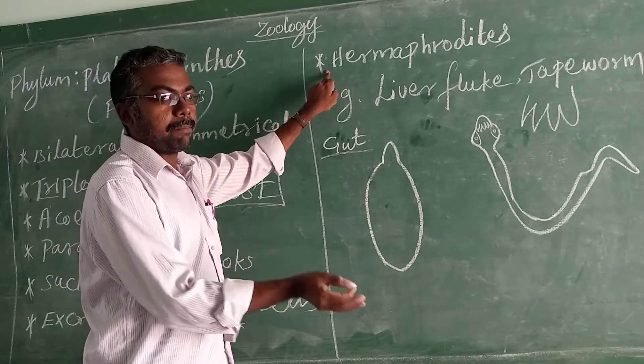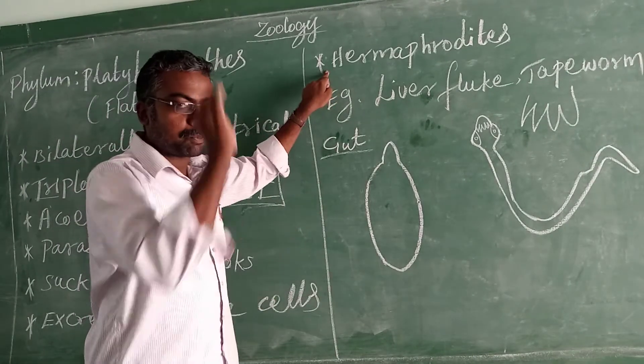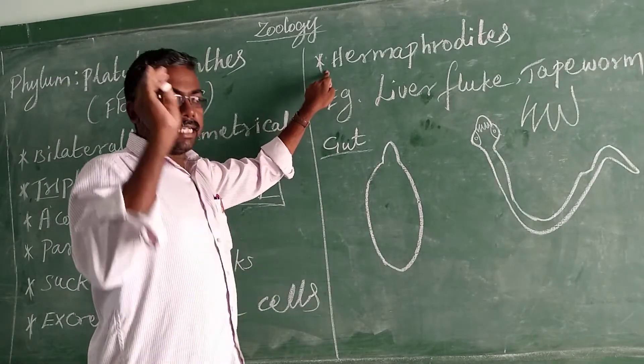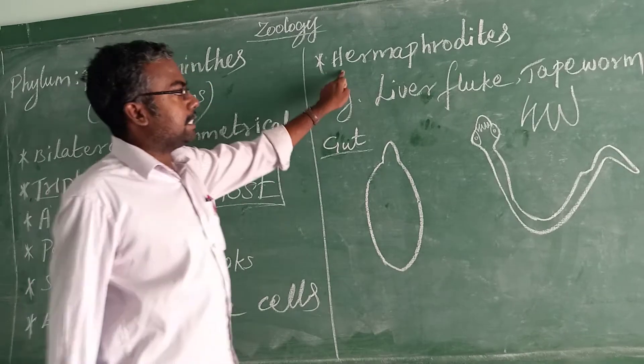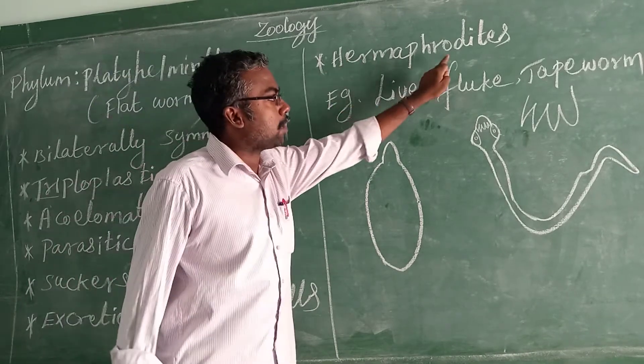They are Hermaphrodites — both male and female sex organs are present in a single individual. That is called hermaphrodite.